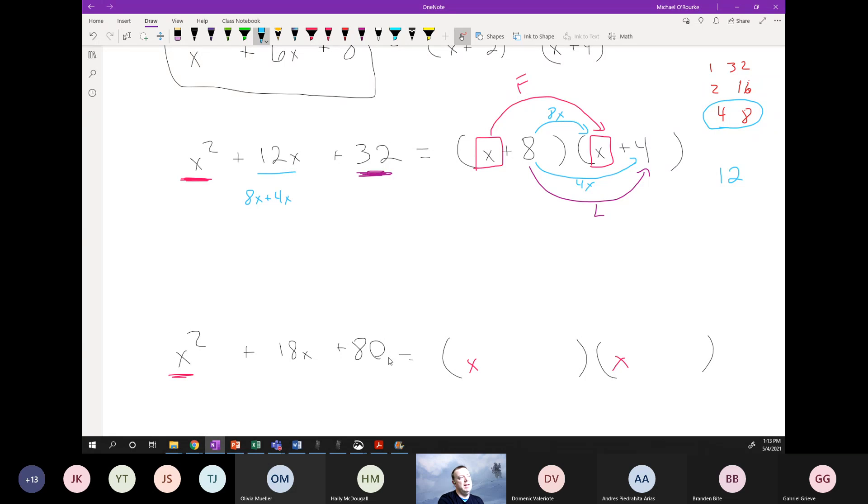Now in this case with the 80, right? Oops, let me go back here. So things that multiply to 80. 1 times 80, 2 times 40, 4 times 20, 5 times 16, 8 times 10.